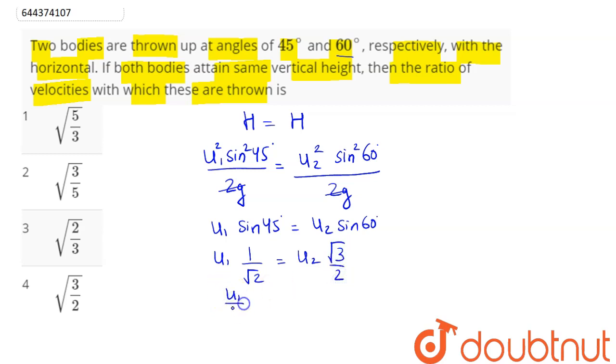So we can say here ratio of velocities comes out here as root under 3 divided by 2, which here is amongst the 4 options, option number 4. So we can say 4 is the correct answer, hence 4 is our answer.